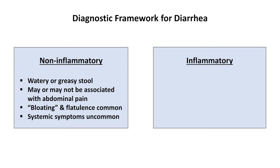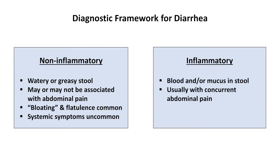In inflammatory diarrhea, the stool is mixed with blood and or mucus. There is usually concurrent abdominal pain, which in some cases occurs predominantly during the bowel movements themselves, while in other cases the pain is present more consistently. Systemic symptoms are common.